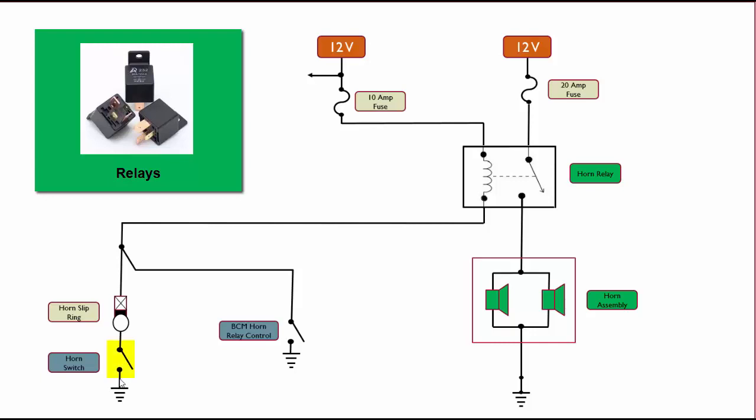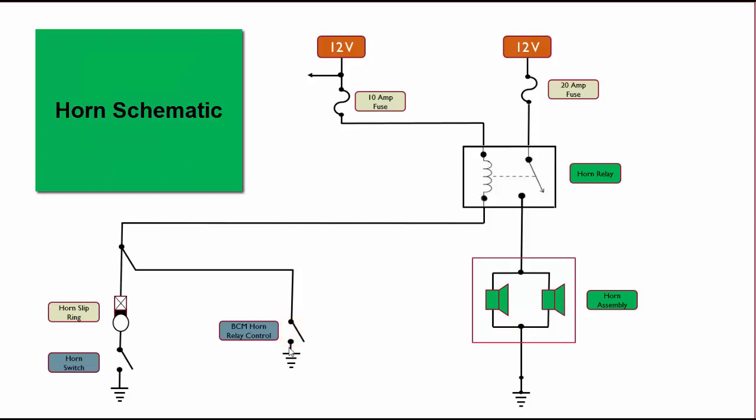We can use either the horn switch or the body control module, or BCM, can turn on the horn relay as well from a signal from the theft deterrent module. And that kind of information about the circuit and the way it operates is usually in the manufacturer's manuals. There's a section called description and operation, which on occasion could be part of the schematic where they describe how it operates.